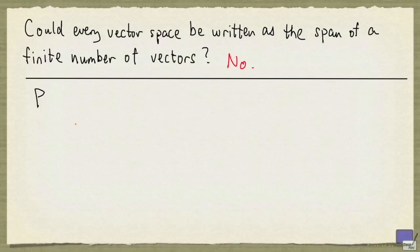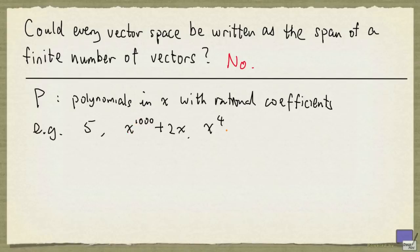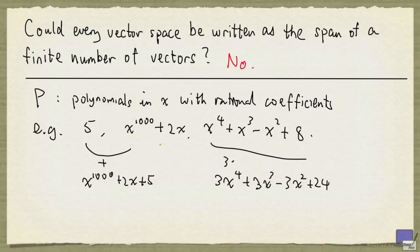Let P be the vector space of polynomials in x with rational coefficients. Here, vector addition is usual polynomial addition, and scalar multiplication is multiplying a polynomial by a rational number. Here are three examples of vectors in this vector space. And if you add these two, then you get the vector x^1000 + 2x + 5, and 3 times this would give you this. So vector addition and scalar multiplication are quite simple.